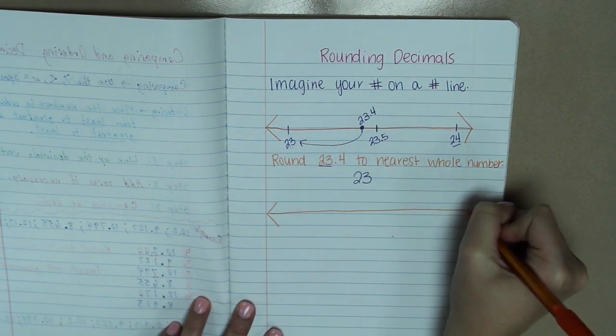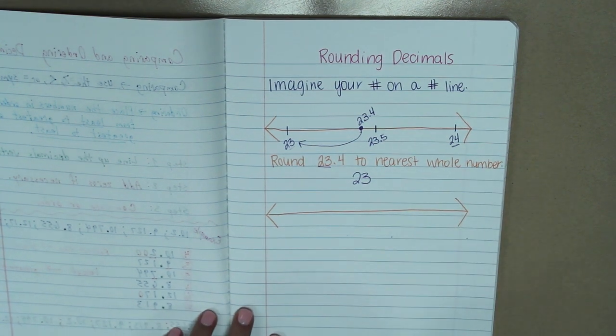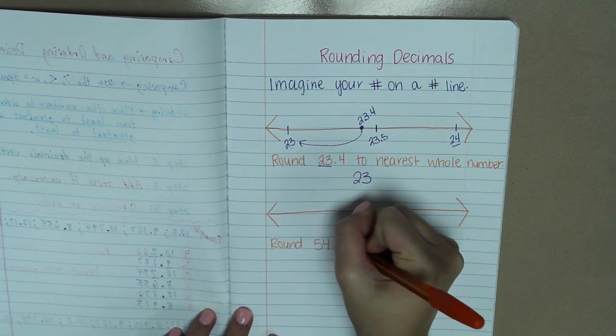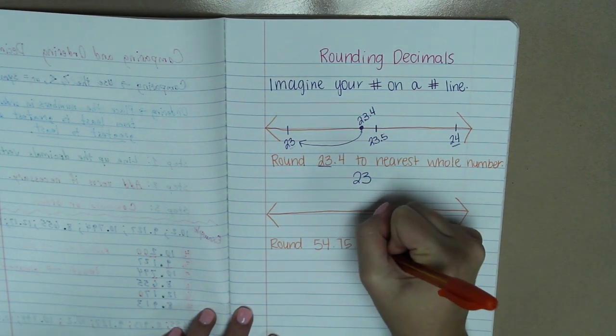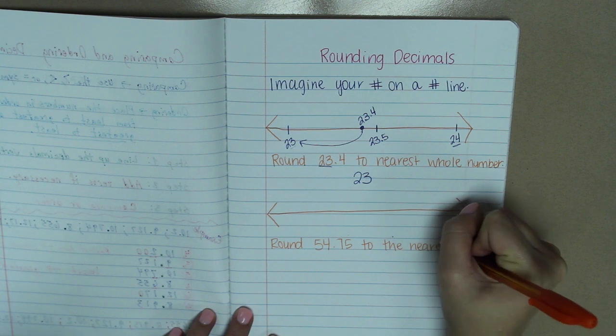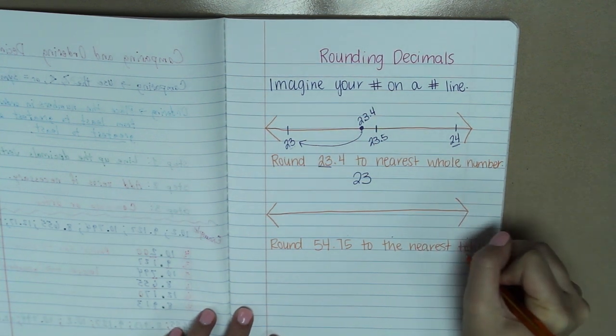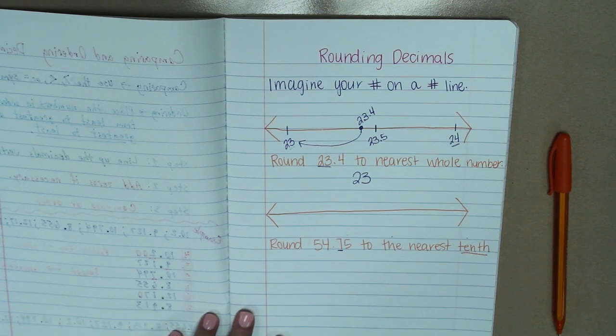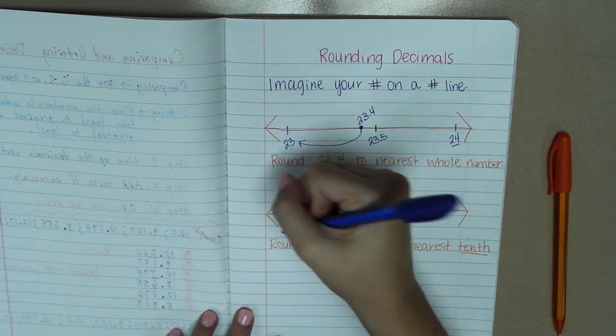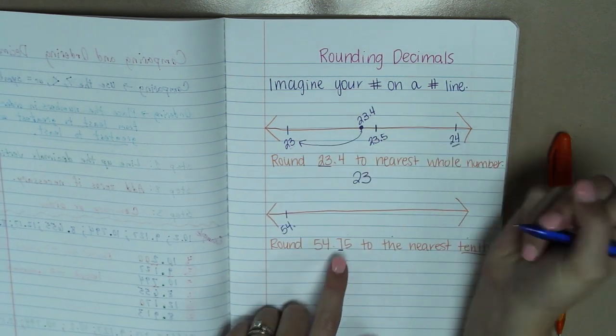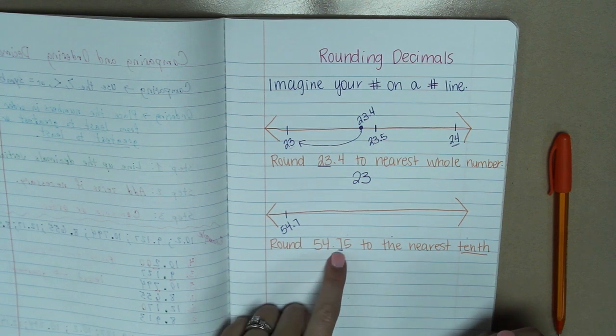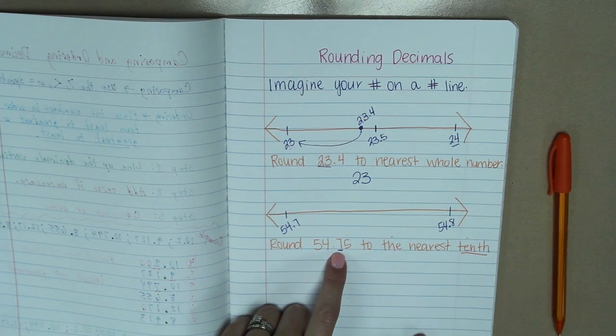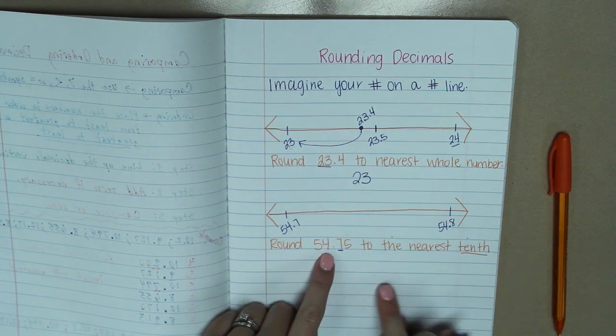Okay, looking at another number line, we are now going to round 54 and 75 hundredths to the nearest tenth. Okay, tenth is in the decimals. So we're looking at our tenths place right here. So on our number line, on the left side is going to be 54 and 7 tenths, if you were to round down. If we were to round up, it would be 54 and 8 tenths. So we have to decide where on our number line this number is located and see which one it is closest to.